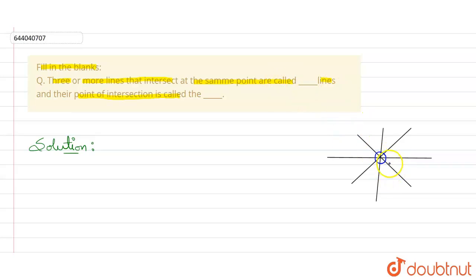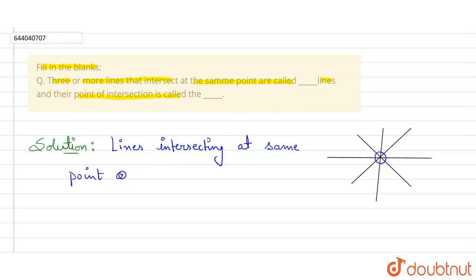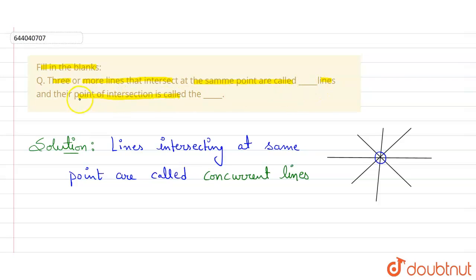We know that three or more lines, or any number of lines, that intersect at the same point are called concurrent lines. So lines intersecting at the same point are called concurrent lines. This is the answer for the first blank.